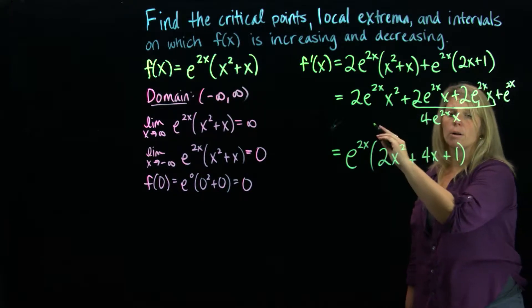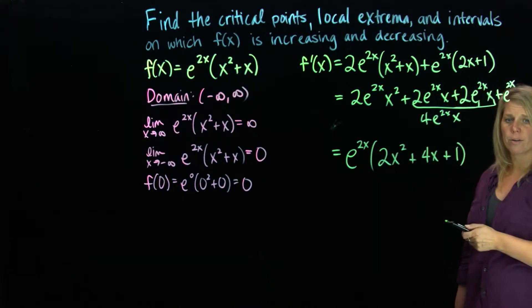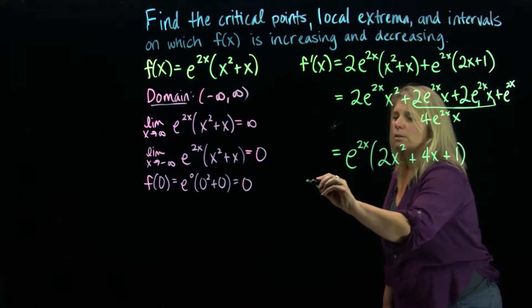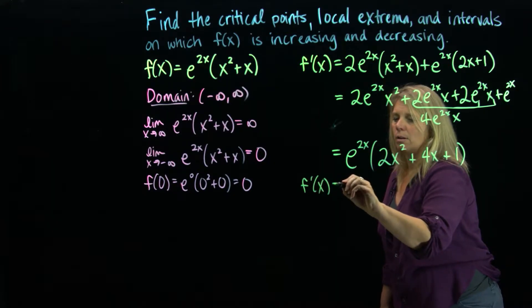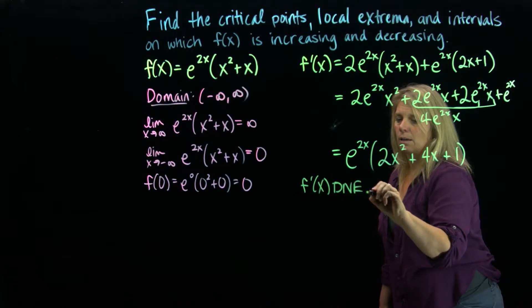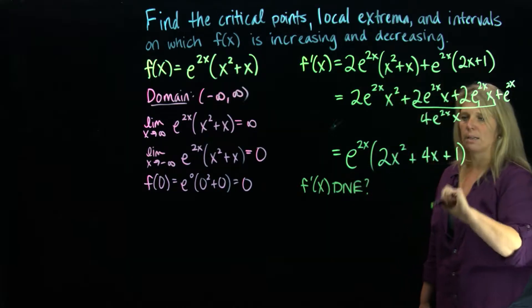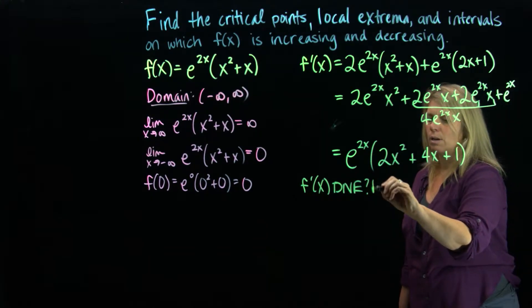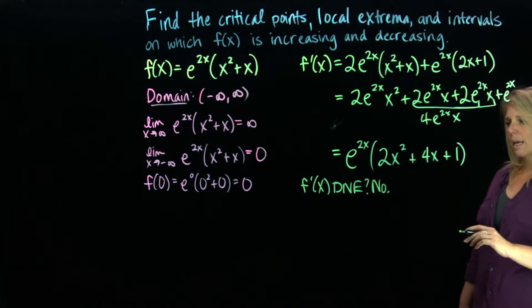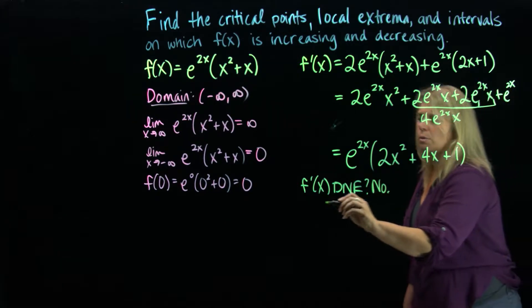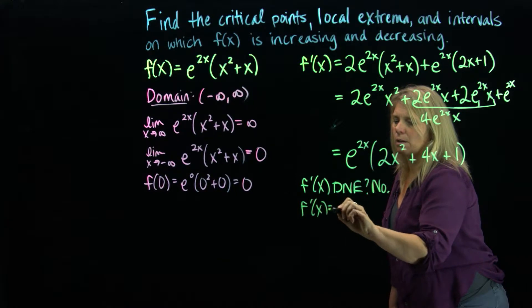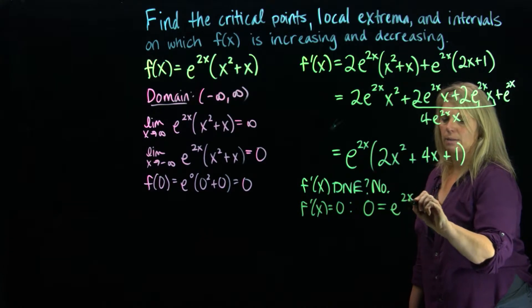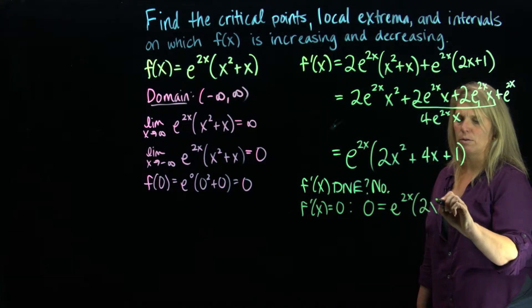When finding critical points, we think about where the derivative is zero or does not exist. This derivative exists everywhere for all values of x — there's no trouble with it being undefined. So we think about where the derivative might be zero, and we set this equation equal to zero and solve for x to find our critical points.